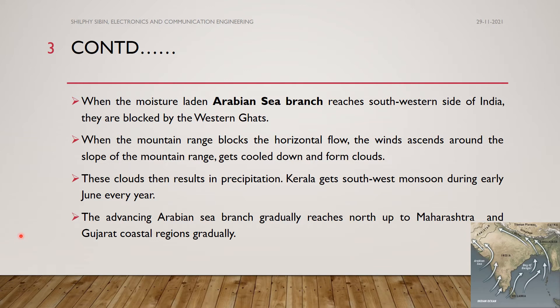The first category is the Arabian Sea branch. When the moisture-laden Arabian Sea branch reaches the southwestern side of India, it is blocked by the Western Ghats mountain range.